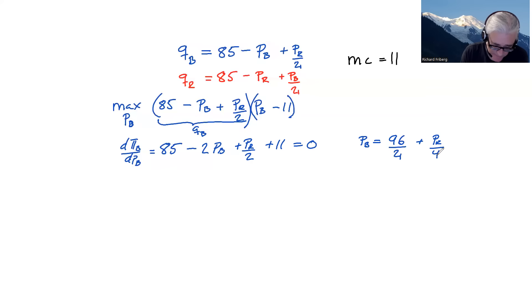Okay, so that's the best response function, the optimal price for firm B as a function of the optimal price for firm R. So we can draw that with PB on the vertical axis, PR on the horizontal. And we have the best response function or reaction function is another term that we sometimes use. So this is the best response function for blue.